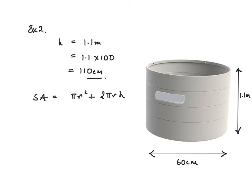We can now proceed. So π, what's the radius? The radius is 60 divided by 2 which is 30 cm. So π times 30² plus 2π times 30 times 110. Now 30² is 900.